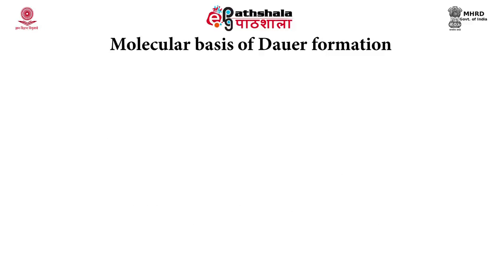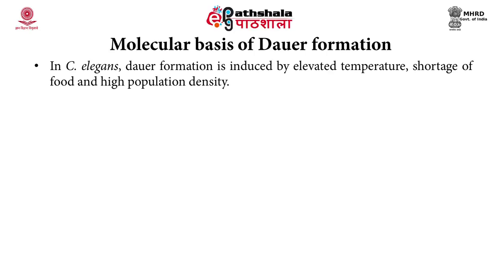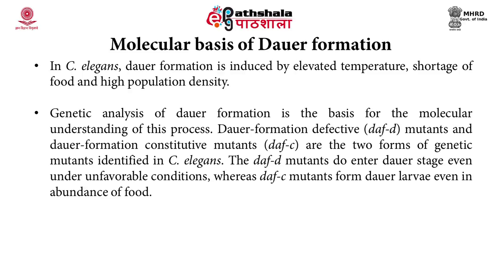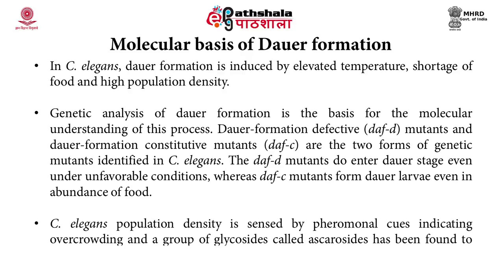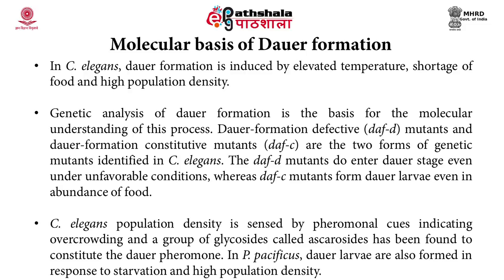Now we will understand the molecular basis of dauer formation. Dauer formation is induced by elevated temperature, shortage of food and high population density. Genetic analysis has shown dauer formation defective mutants and dauer formation constitutive mutants, which are the two forms of genetic mutants. The DAF-D or defective mutants do not enter dauer stage even under unfavorable conditions. Whereas the DAF-C or constitutive mutants form dauer larvae even in the abundance of food. C. elegans population density is sensed by pheromonal cues indicating overcrowding, and a group of glycosides called ascarosides constitutes the dauer pheromone.